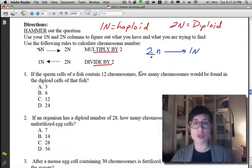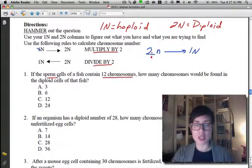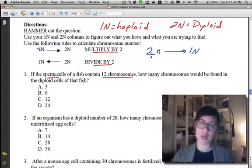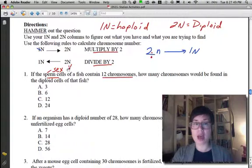Alright, so let's go ahead and look at question number 1. Question number 1 says, if the sperm cell of a fish contains 12 chromosomes. So, I'm going to underline this and it says we have 12 chromosomes in a sperm cell. So, we need to ask ourselves, are sperm haploid or diploid? Well, sperm cells are sex cells and we know sex cells always have half the number of chromosomes. So, this is my haploid number. So, I know that 12 is 1N.